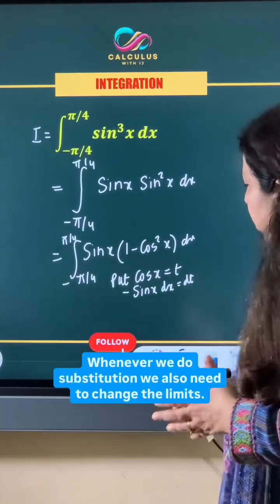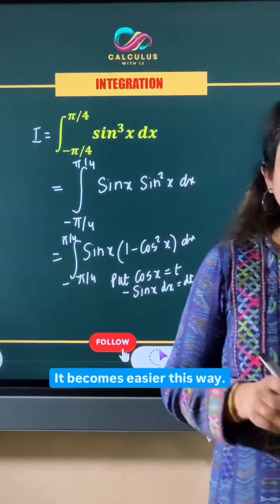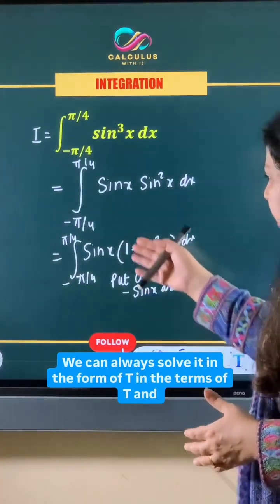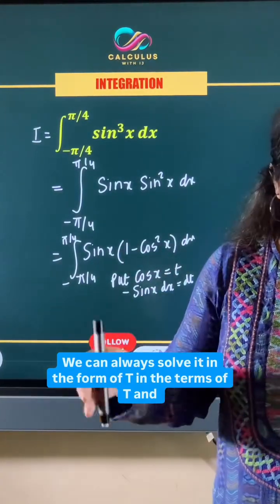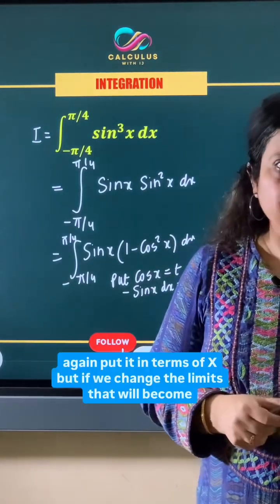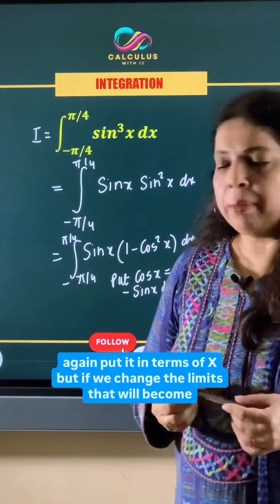Whenever we do substitution, we also need to change the limits. It becomes easier this way. We can always solve it in the form of t in terms of t and again put it in terms of x, but if we change the limits that will become easier.